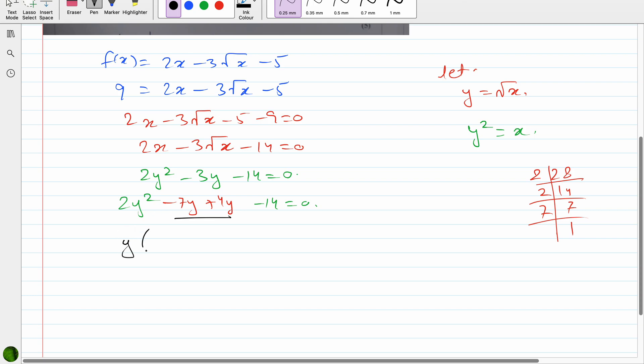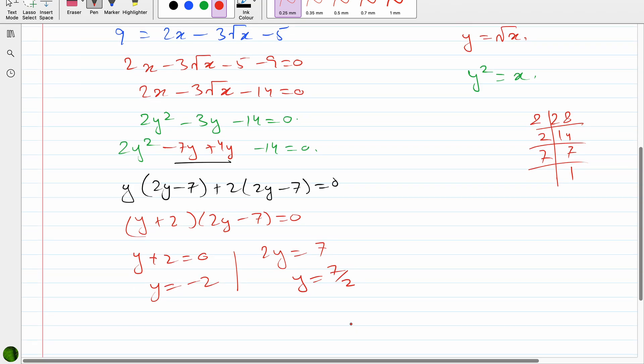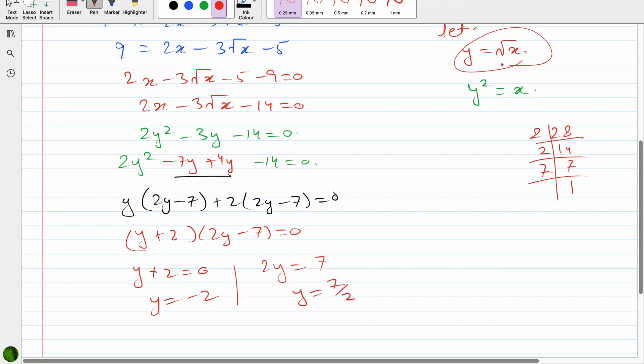So I'm taking out common: this is y(2y - 7) + 2(2y - 7) = 0. (y + 2)(2y - 7) = 0. So y + 2 = 0 or 2y - 7 = 0. y = -2 and the second factor is y = 7/2. And we knew that y = √x.